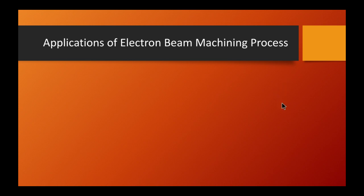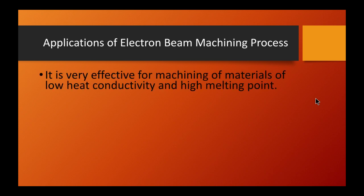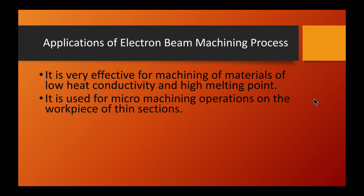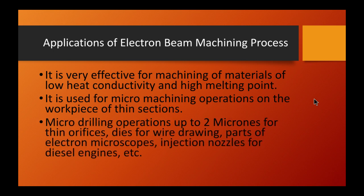Electron beam machining is very effective for machining materials of low heat conductivity and high melting point. It is used for micro-machining operations on thin sections. Specific applications include micro-drilling operations up to two microns, thin orifices, dies for wire drawing, parts of electron microscopes, and injection nozzles for diesel engines.